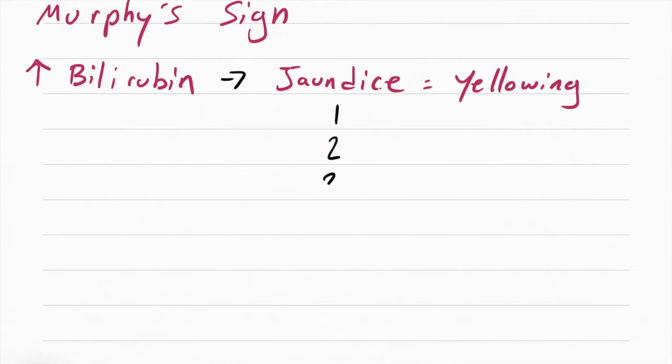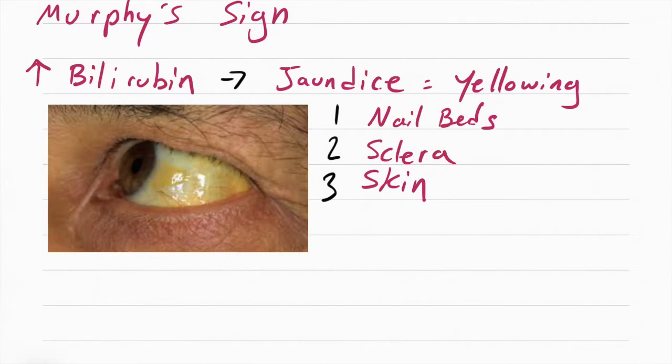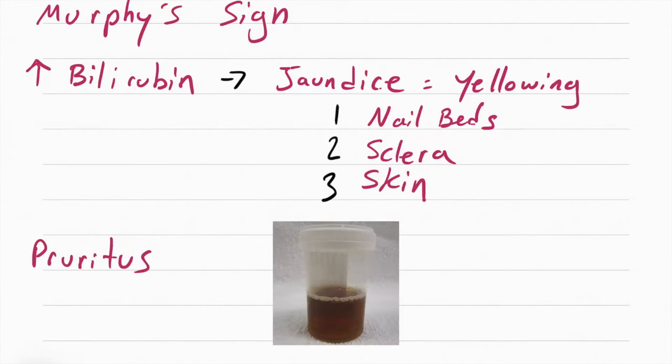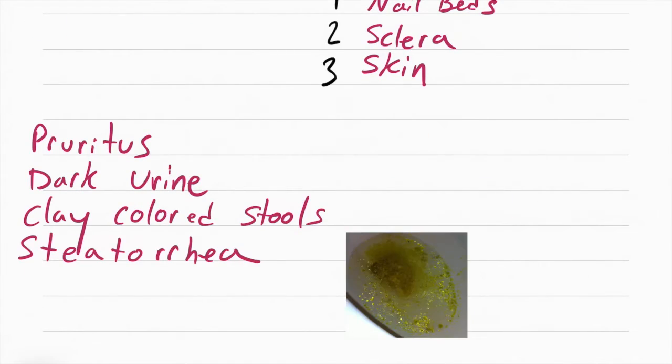Jaundice means yellowing. The places where you want to check for jaundice is the nail beds, the sclera, and the skin. The patient can also have pruritus, which means itchy skin, dark urine, clay-colored stools, and something called steatorrhea. Steatorrhea means greasy, floaty poop.